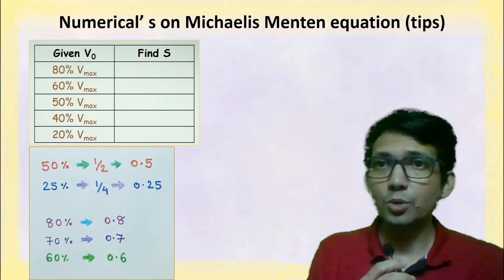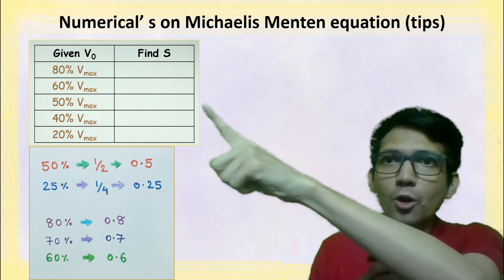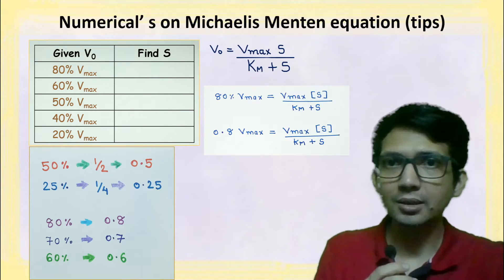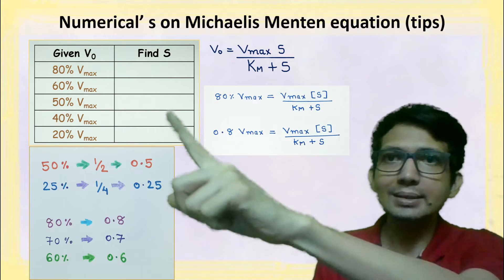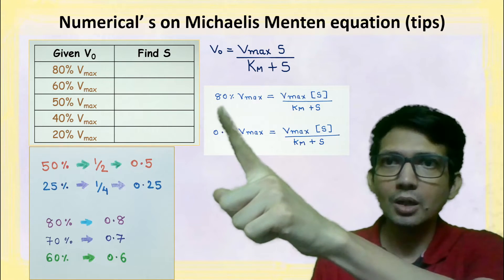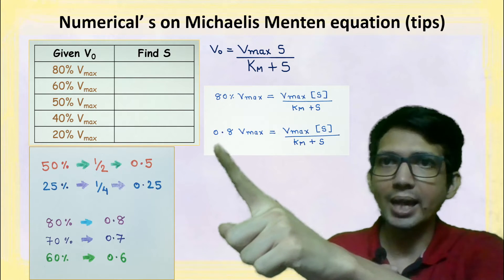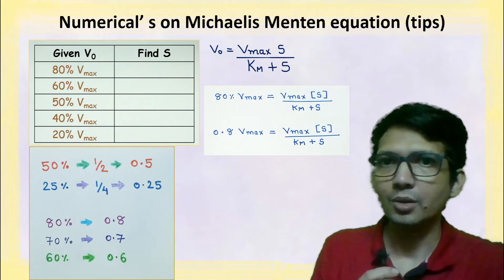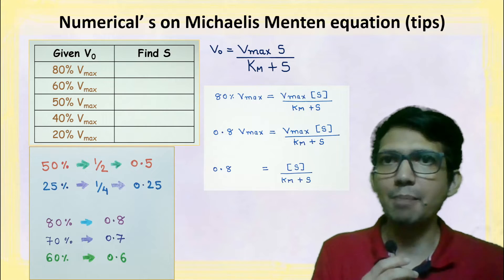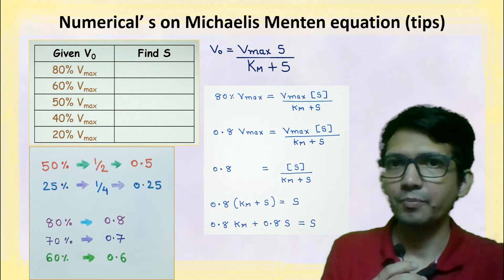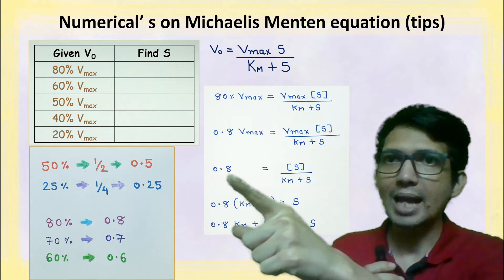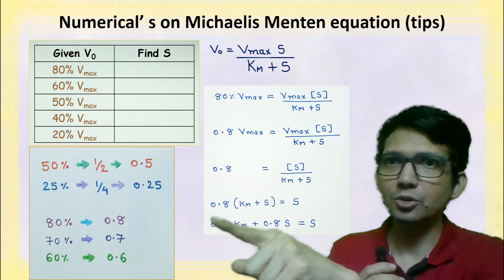Let's calculate the first case: the given value of v0 is 80 percent of vmax. In the Michaelis-Menten equation, v0 is replaced by 0.8 vmax. Solving this, we get 0.8 equals s divided by (km plus s). Multiplying both sides by (km plus s), we get the expanded equation.